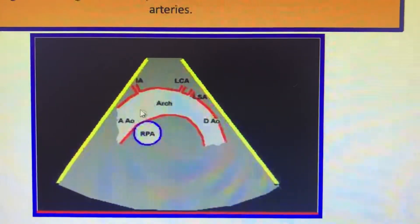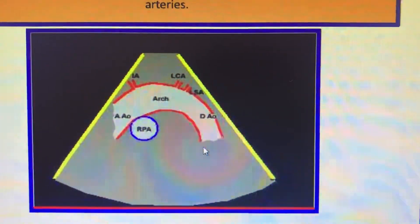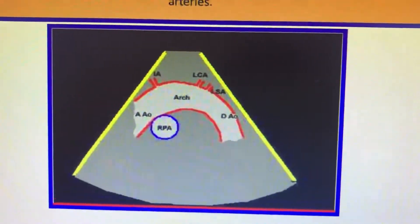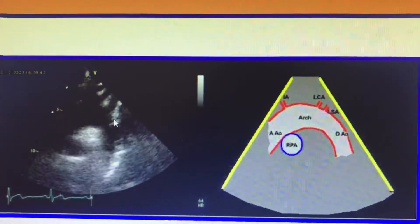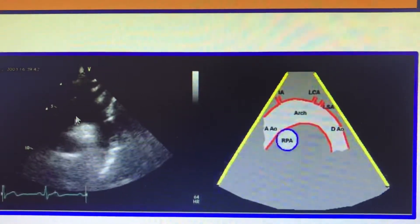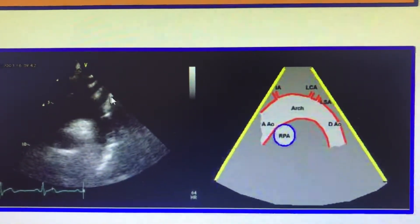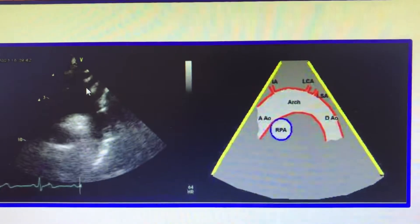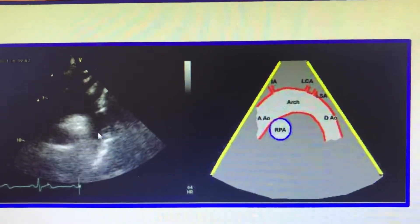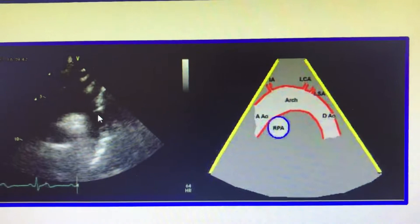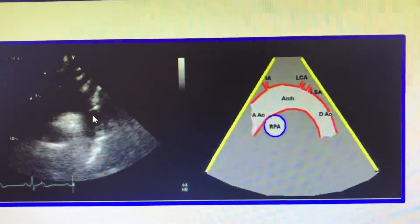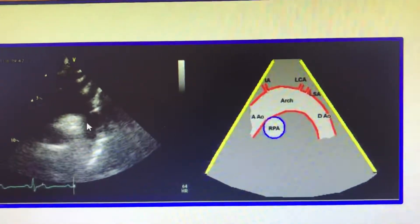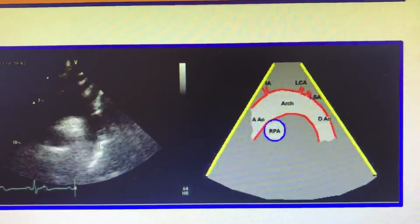What is very important in the suprasternal view is the arch and the descending aorta. You can see here beautifully the arch and descending aorta, the RPA, and the subclavian or innominate carotid arteries going away from the probe. We assess the descending aorta and arch because distal to the left subclavian artery is where we see coarctation of aorta and interrupted aorta.